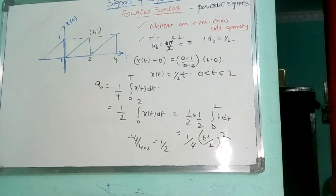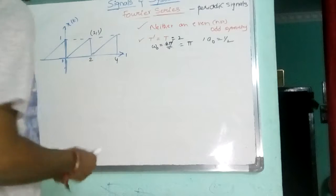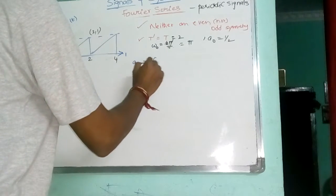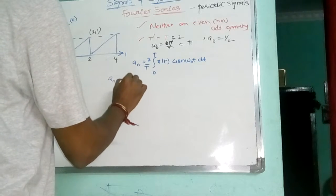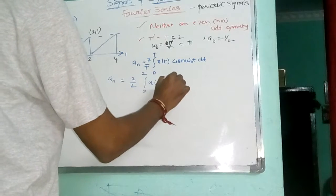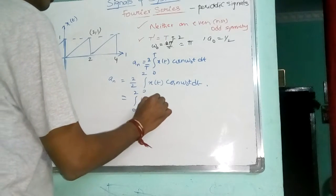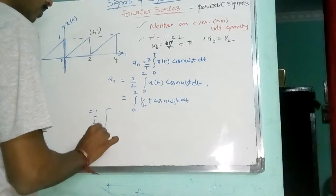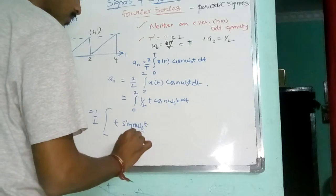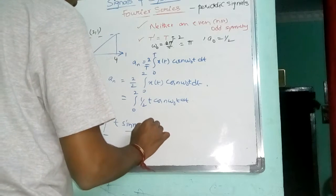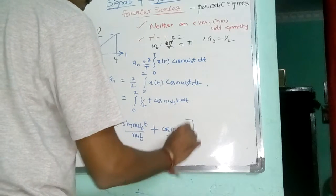Next is finding out A N. A N is 2 by T, integral 0 to 2, x of T, cos N omega naught, DT. So A N is 2 by T, integral 0 to 2, x of T, cos N omega naught, DT. That means: 0 to 2, x of T is half t, so cos omega naught. Apply integration by parts: U into V — integral of V. Integration of cosine is sine, again integration of sine is cosine. So I get: cos N omega naught T by N omega naught whole square, from 0 to 2.